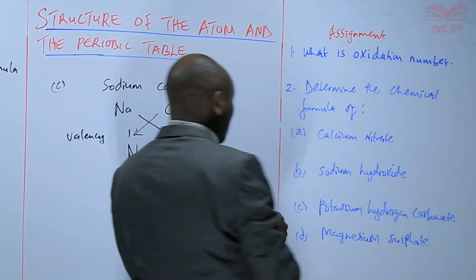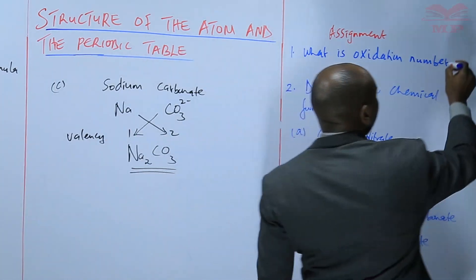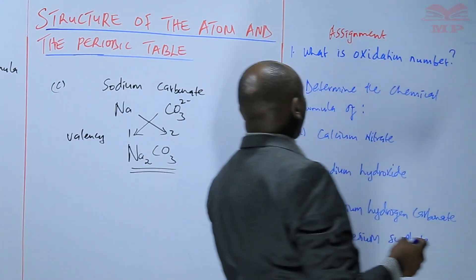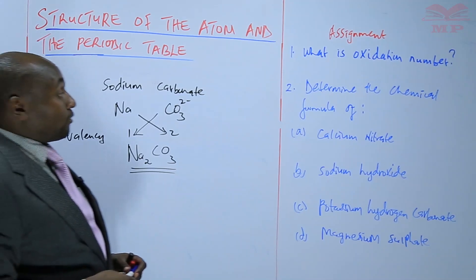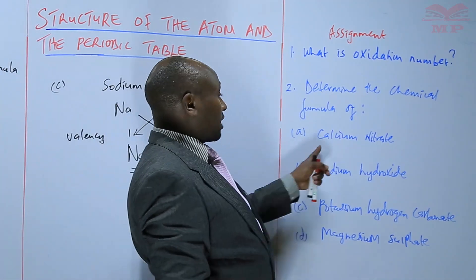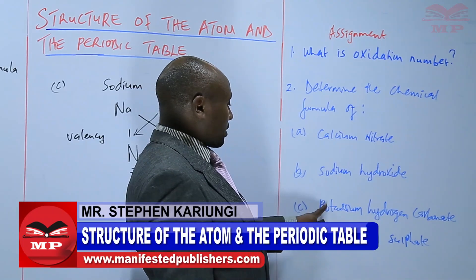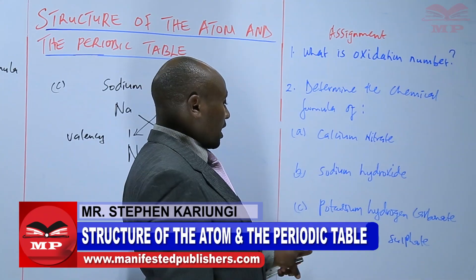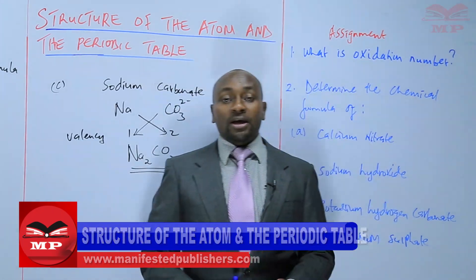So in the assignment, what is oxidation number? Number 2, determine the chemical formula of calcium nitrate, sodium hydroxide, potassium hydrogen carbonate and magnesium sulfate using the valences. So we'll stop there until next time, goodbye.